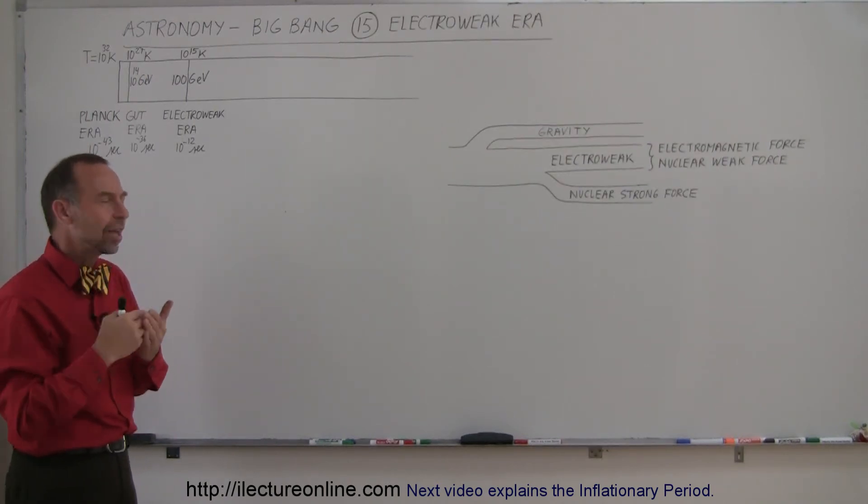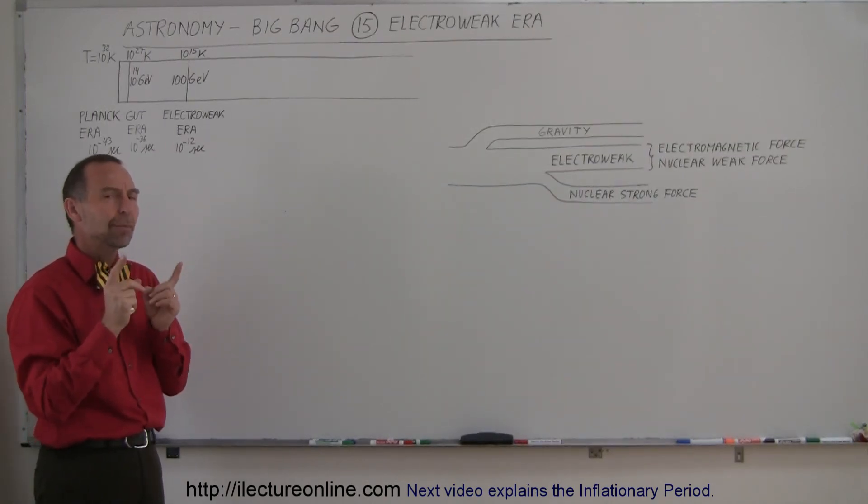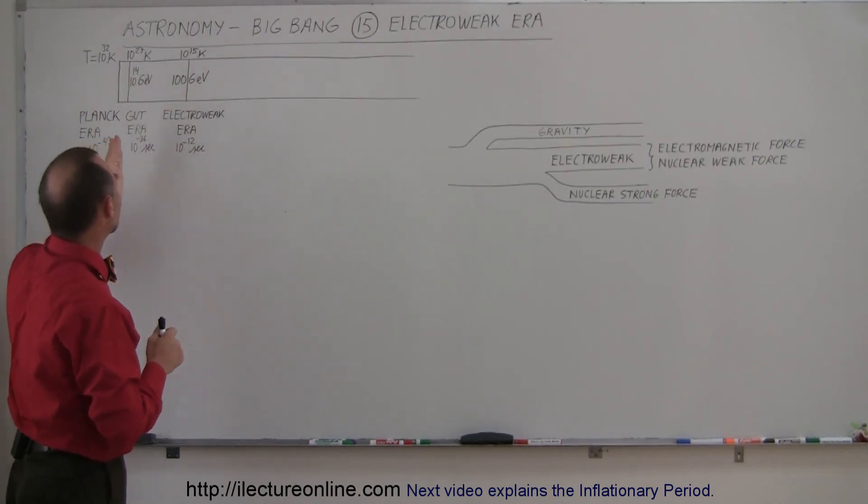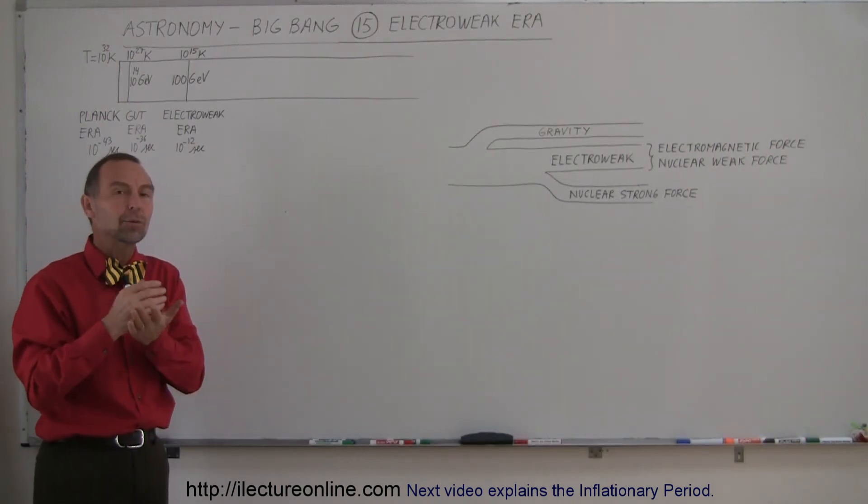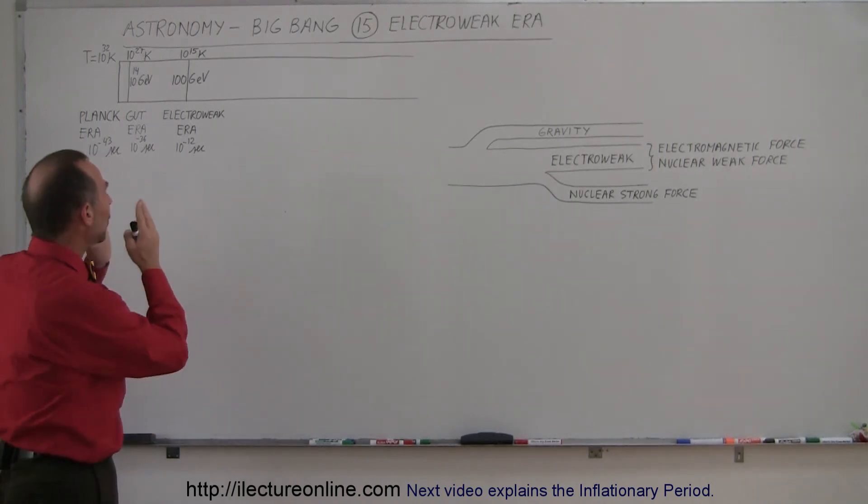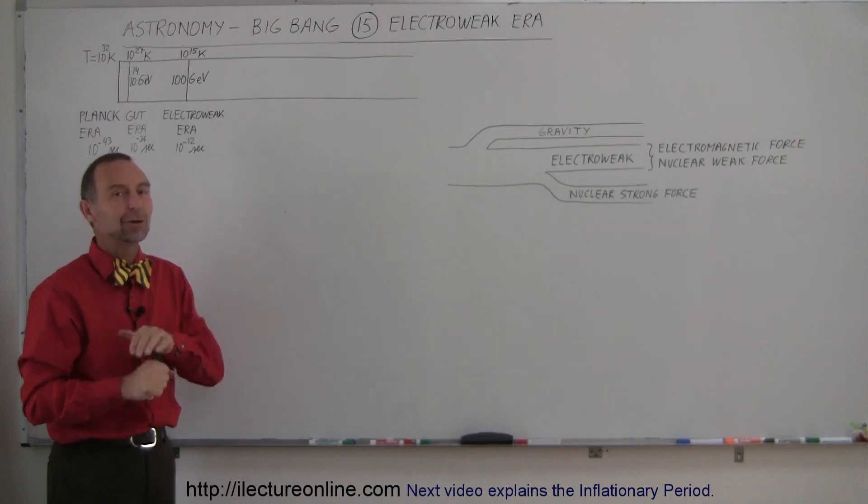Well, to understand that, we need to go to a very special event that must have happened, something we call the inflationary period. Something happened within this period of time, somewhere between 10 to the minus 36 seconds and 10 to the minus 12 seconds, that explains a lot of things that otherwise would be unexplainable. So a very special event happened within what we call the electroweak era. And if you want to know about that one, you need to go look at the next video.